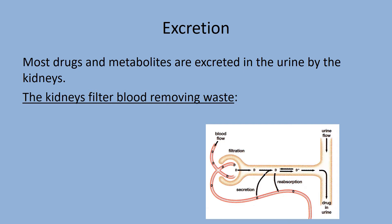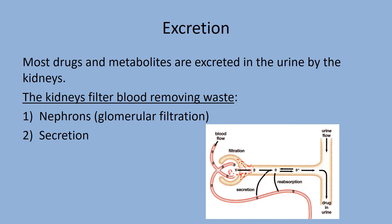Excretion via the kidney involves three steps: filtration — blood pressure forces particles through the fenestrated beds of the glomerulus indiscriminately; secretion — waste products and toxins that weren't filtered are actively secreted into the urine; and reabsorption — most water and needed nutrients are reabsorbed, otherwise we'd need to urinate about 800 liters a day. Anything affecting these steps affects drug excretion.